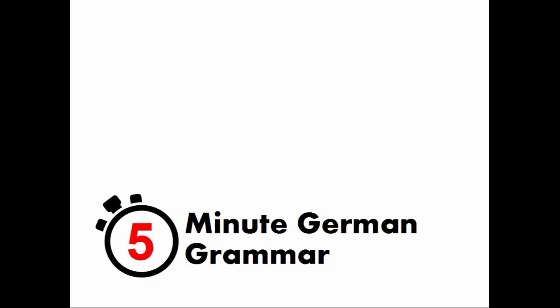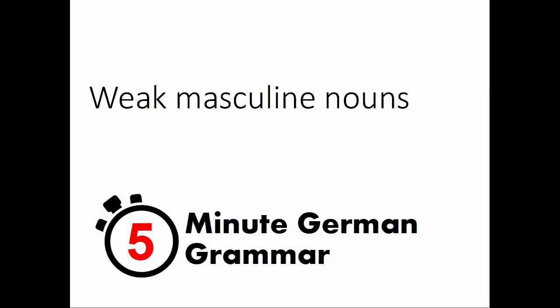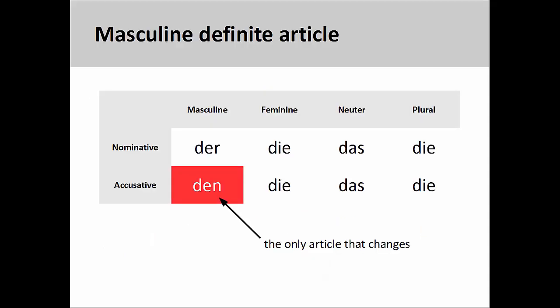Welcome to 5-Minute German Grammar. This presentation will introduce weak masculine nouns. You'll recall from an earlier presentation that the masculine definite article changes from der to den as it moves from the nominative to the accusative. Certain masculine nouns also change as they move from the nominative to the accusative. These are called weak masculine nouns.